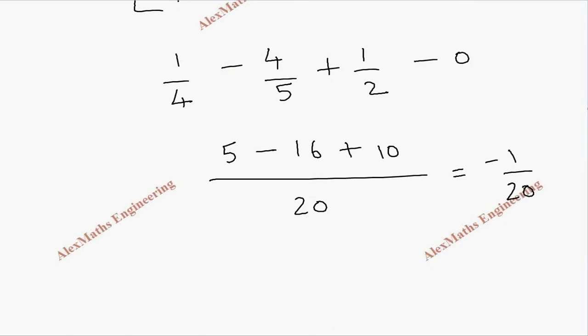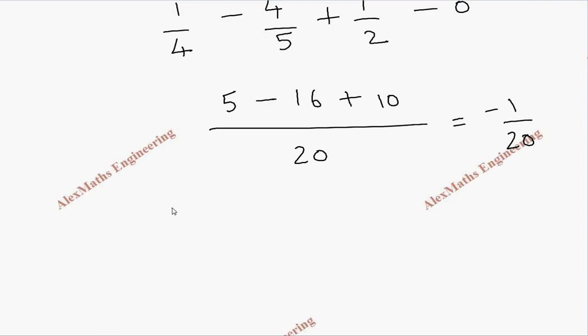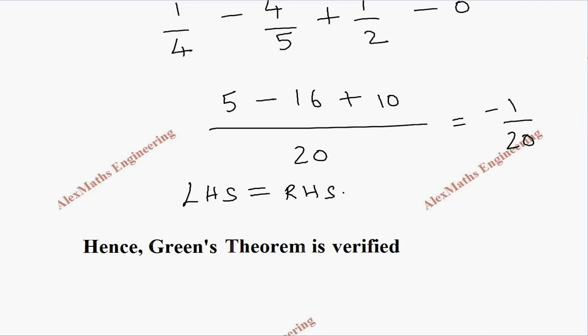Since both the LHS and RHS equal minus 1/20, we have LHS equals RHS. Hence Green's theorem is verified.